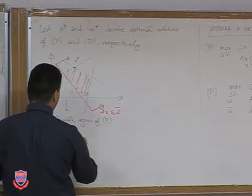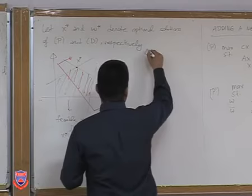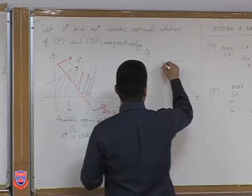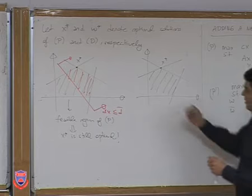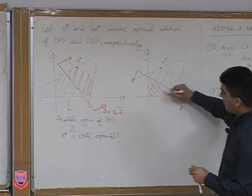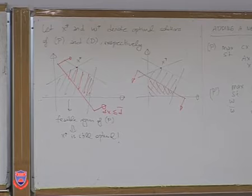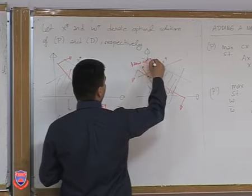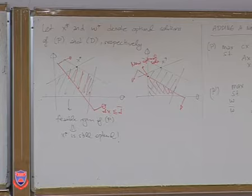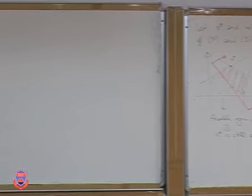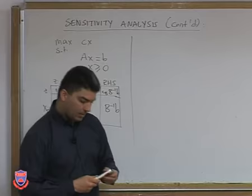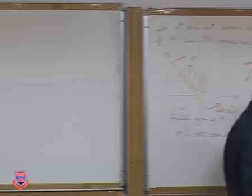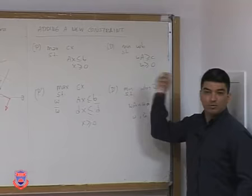In the first case, x* is still optimal. In the second case, if the new constraint looks like this and the new feasible region is the red area, then x* won't even be feasible. So there are two possibilities: if the previous optimal solution satisfies the new constraint, it's still optimal; if it does not satisfy the new constraint, the optimal solution will change. Now let me look at this from the dual perspective.